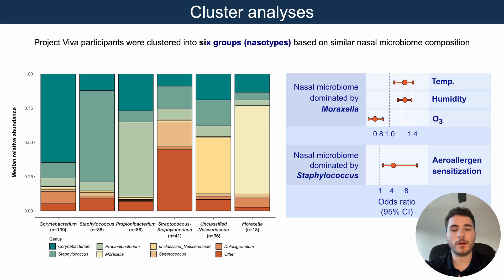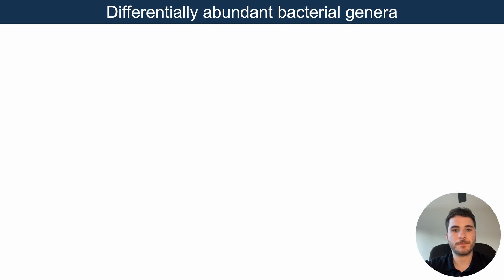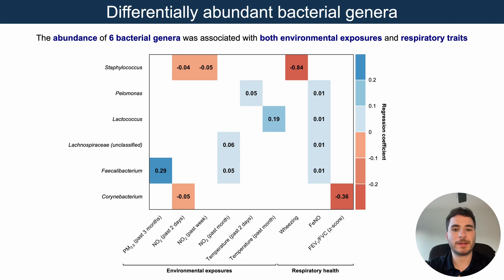We also observed that dominance of Staphylococcus was positively associated with higher allergen sensitization compared to Propionibacterium-dominant clusters. Finally, we reported that the abundance of multiple bacterial genera were associated with environmental exposures and respiratory health. Six of these bacterial genera were associated both with exposures such as PM2.5, NO2, and temperature, and with respiratory traits such as wheeze, FeNO, and lung function, including common bacteria such as Staphylococcus and Corynebacterium.